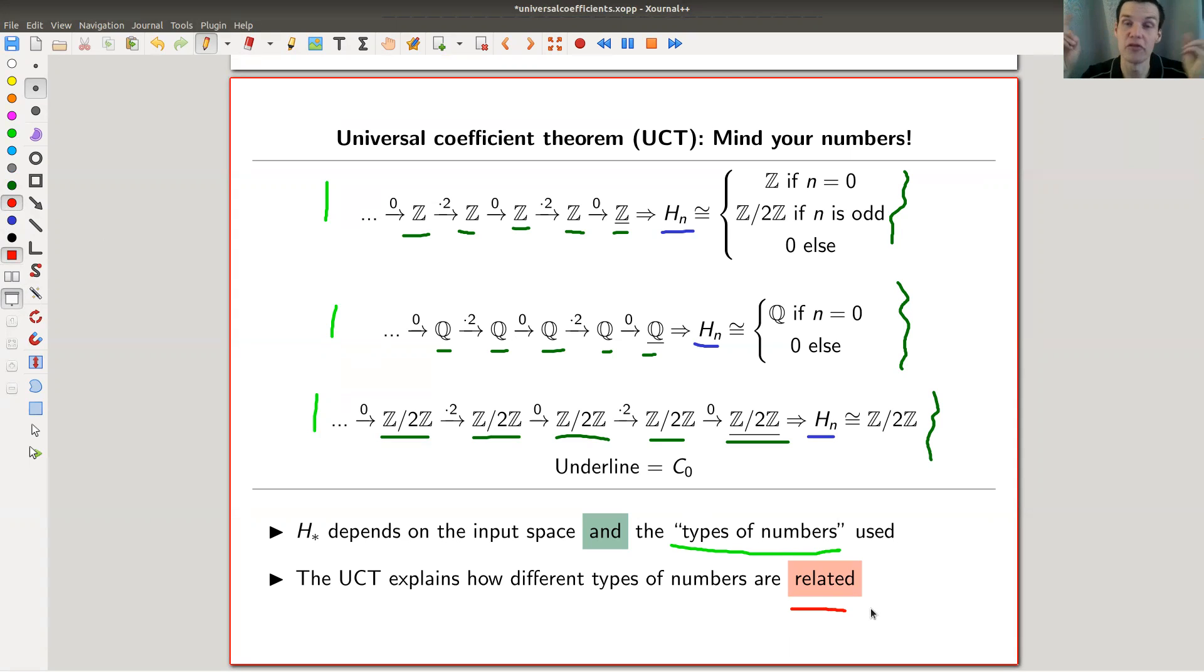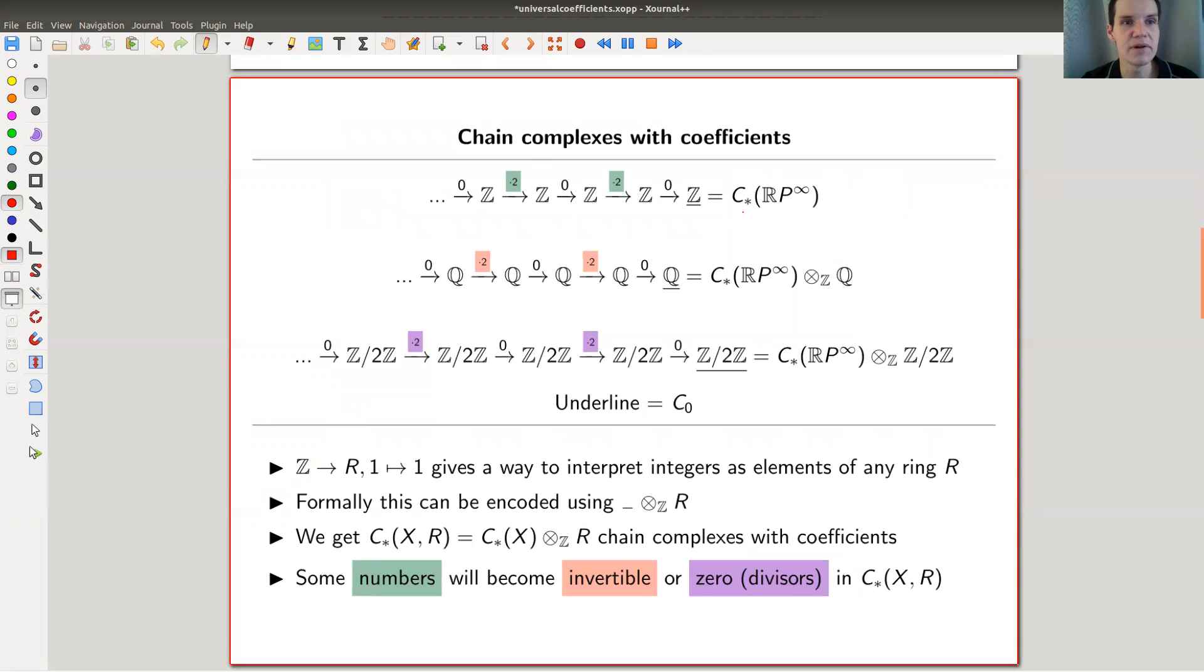And in the end it will say that the integers are the universal coefficients. We will see what that means. But this is the main idea - we can vary our number system. So how does homology change if we vary our number system? This chain complex here is actually the chain complex of the infinite projective plane. It's very easy constructed as a CW complex - you have a cell in each dimension and they are glued together by a Z mod 2 map.